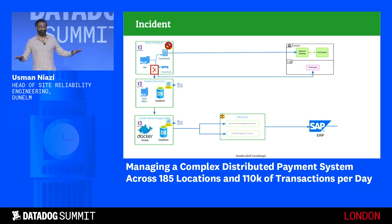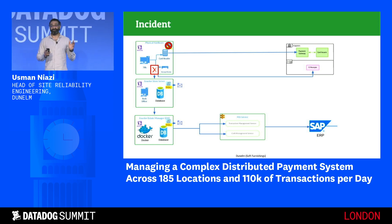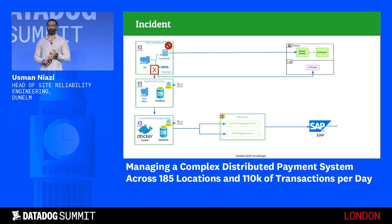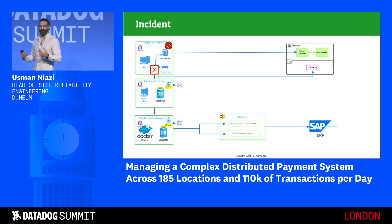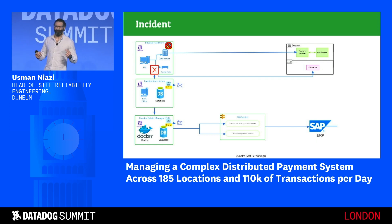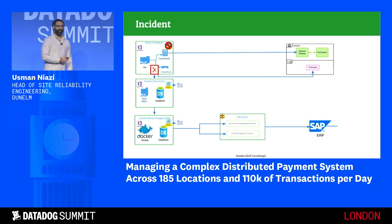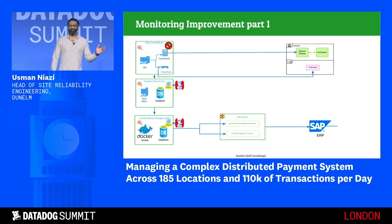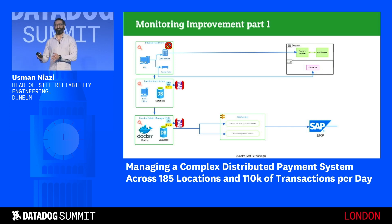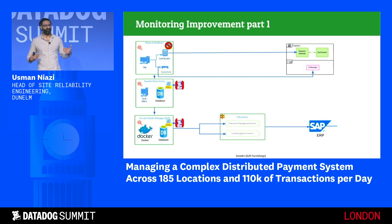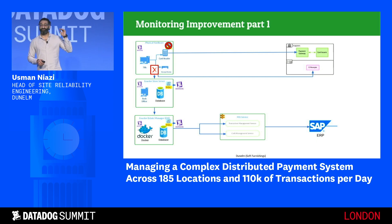Coming back to the incident: we were missing thousands of store transactions. There were multiple reasons. One of the main reasons was changes we had made to the store server, which meant some transactions were now failing to be processed. But we were also seeing some transactions not even hitting the store server. One of the things we did right away was to start sending metrics to Datadog instead of email, which gives us a lot more flexibility. But that still leaves the transactions which are not even hitting the store server.